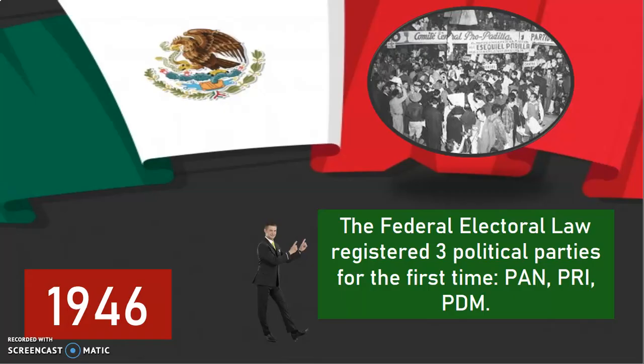Let's start in the year 1946. In that year, the federal electoral law registered three political parties for the first time. They were PAN, PRI, and the now-extinct PDME.